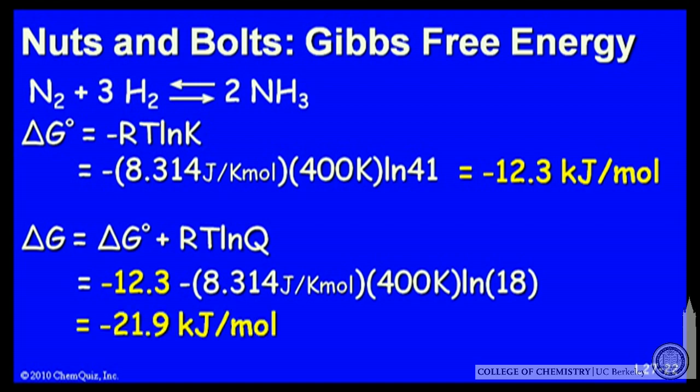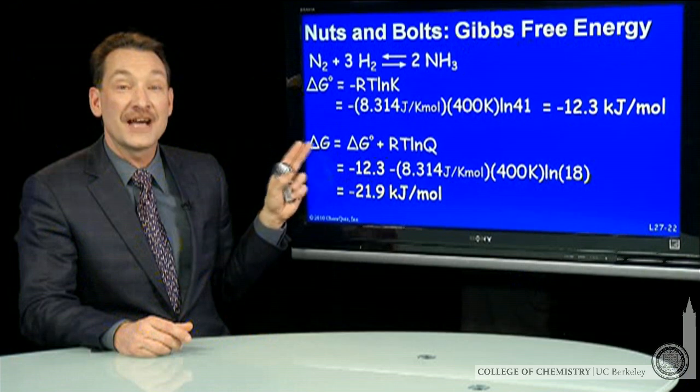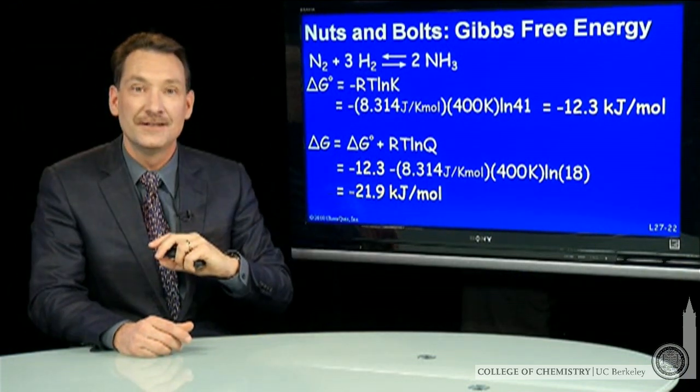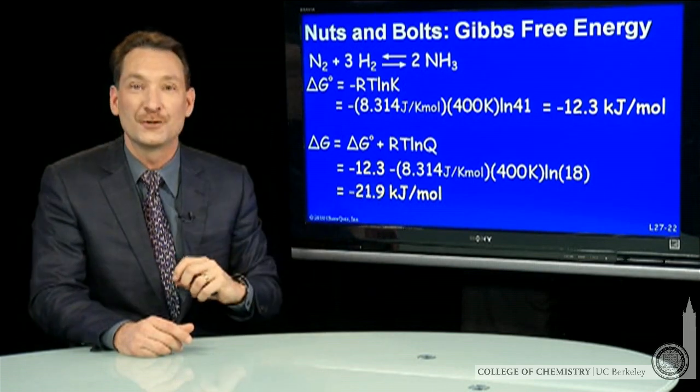So now I can do that arithmetic, and I find out that the delta G for the reaction under these conditions is indeed minus 21.9 kilojoules per mole.